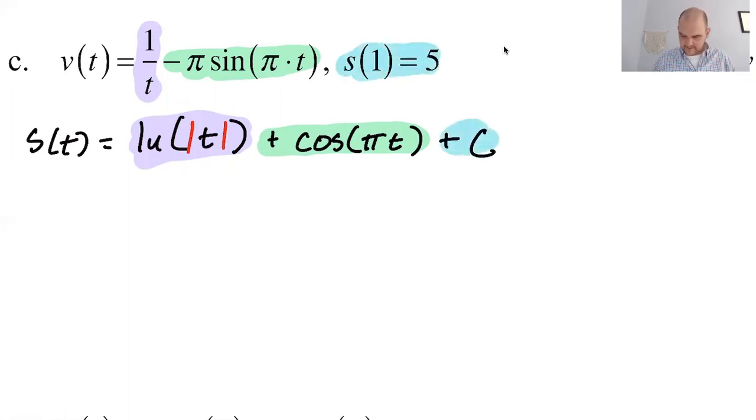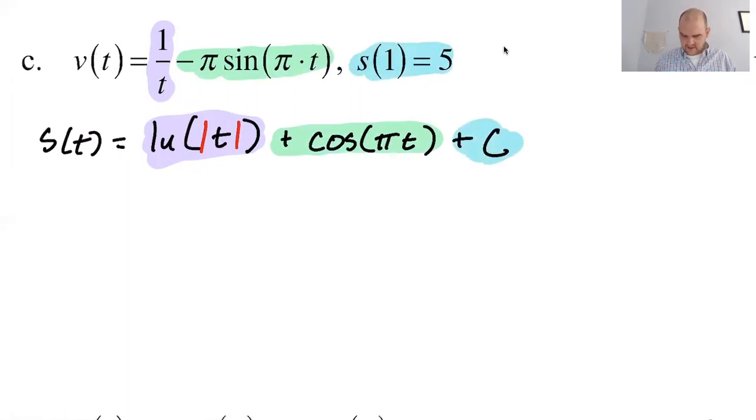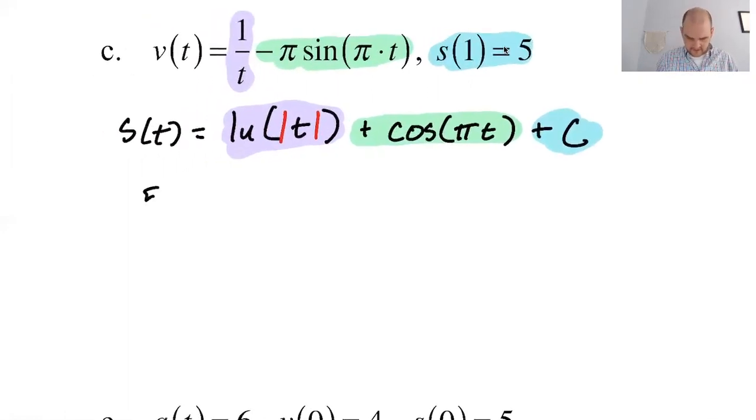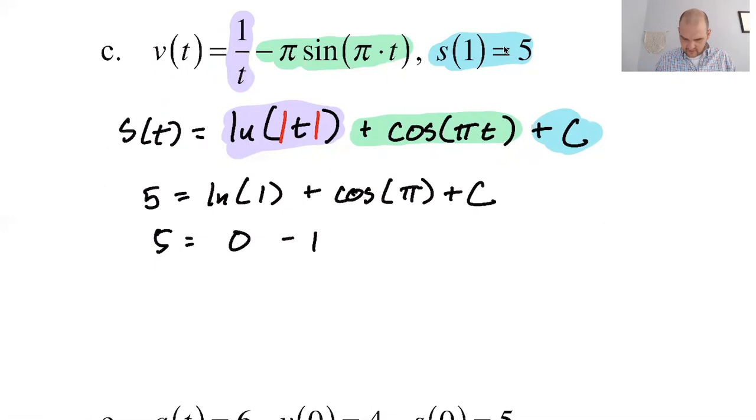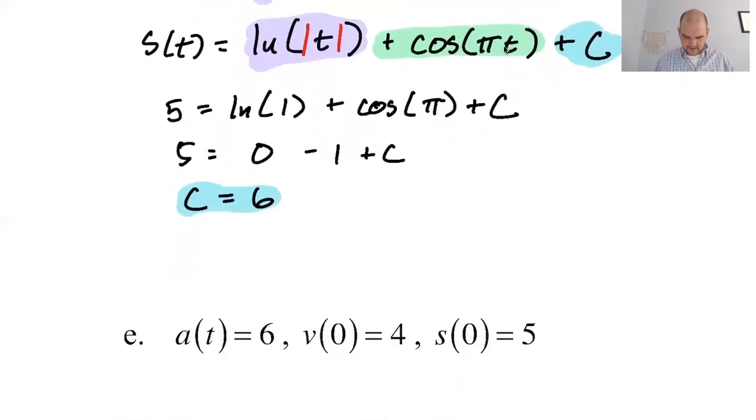Got to solve for c. We use this information. This seems like it might be unpleasant. So this will be five is equal to the natural log of the absolute value of one is just one plus the cosine of pi plus c. So five is equal to the natural log of one is zero. So that's gone. I'll write it though. The cosine of pi is negative one plus c. So c is actually equal to six. So that's what we're getting for that. All right, let's put it all together to get this position function.